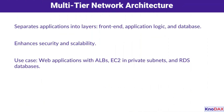Next, the multi-tier architecture. This approach separates your application into distinct layers — front-end, application logic, and database. By doing so, you enhance both security and scalability. A common use case is a web application where you use application load balancers for the front-end, EC2 instances in private subnets for processing, and RDS for secure data storage. This layered design ensures efficient scaling and robust security.